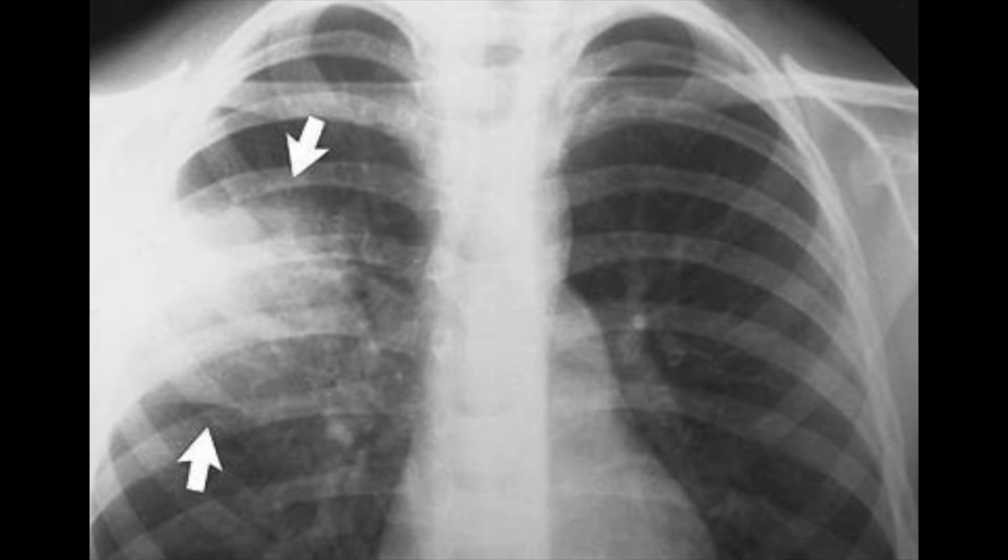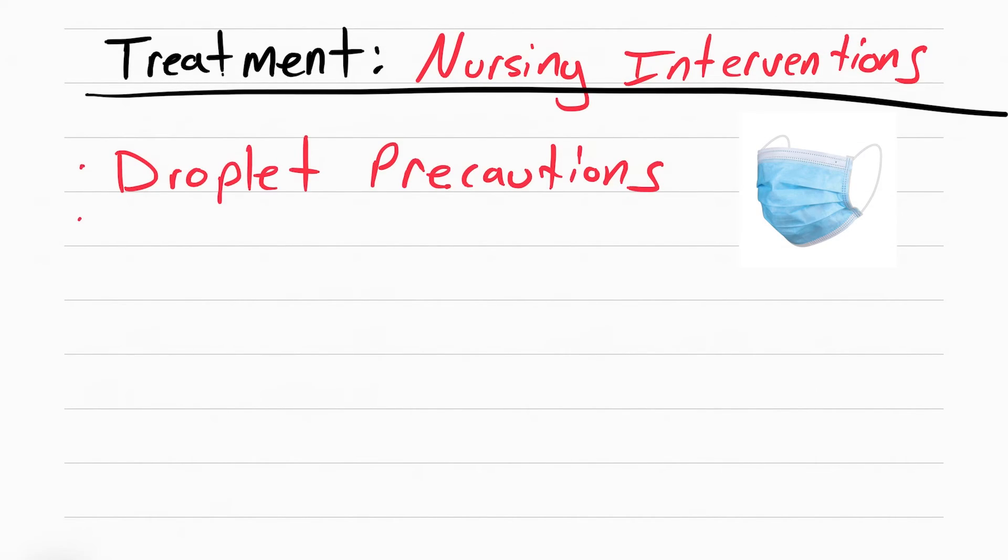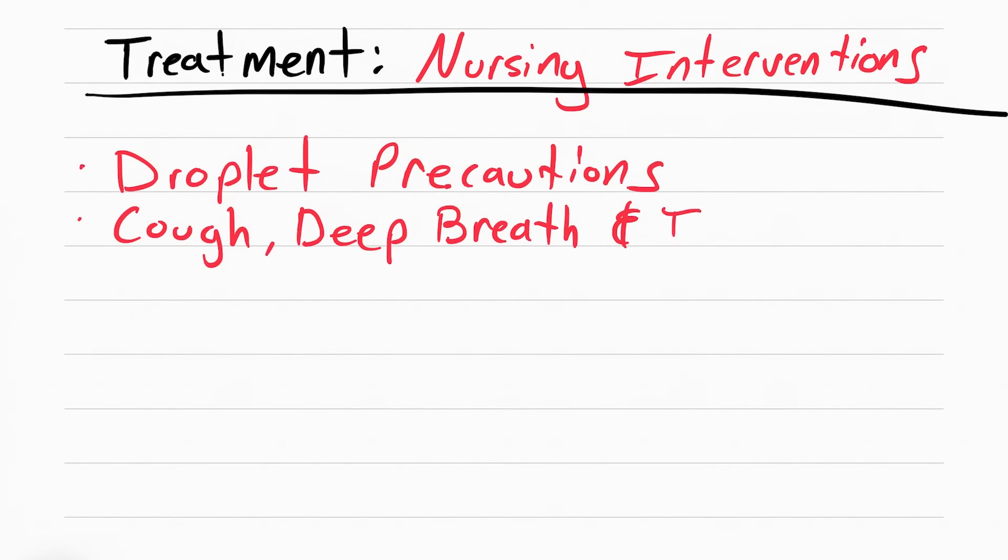For nursing interventions, the first thing is put this patient on droplet precautions. This is because they can spread the pneumonia around and you want to protect yourselves.